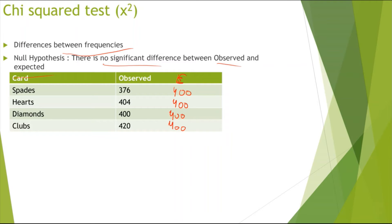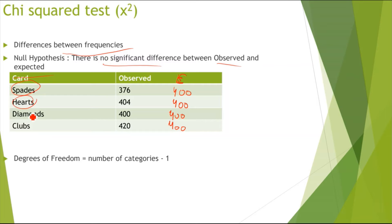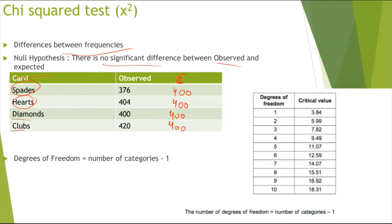As you can see, the observed is different, and it would be different in real life. In this case, the degrees of freedom is the number of categories minus 1. I can see there are four different categories — spades, hearts, diamonds, and clubs. So 4 minus 1 is 3, and my critical value would be 7.82.